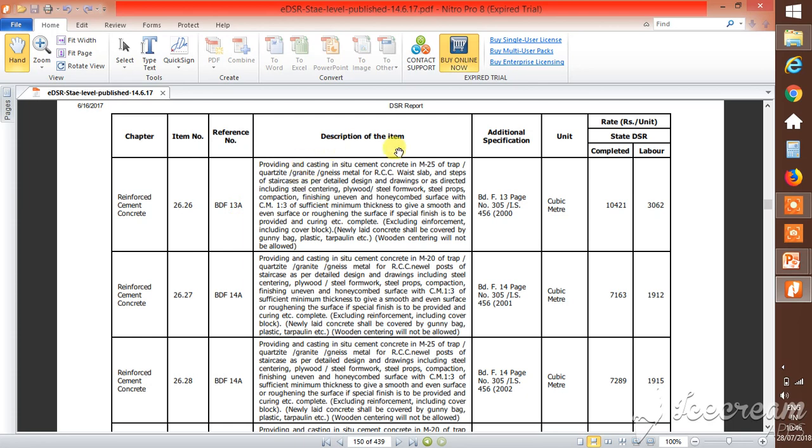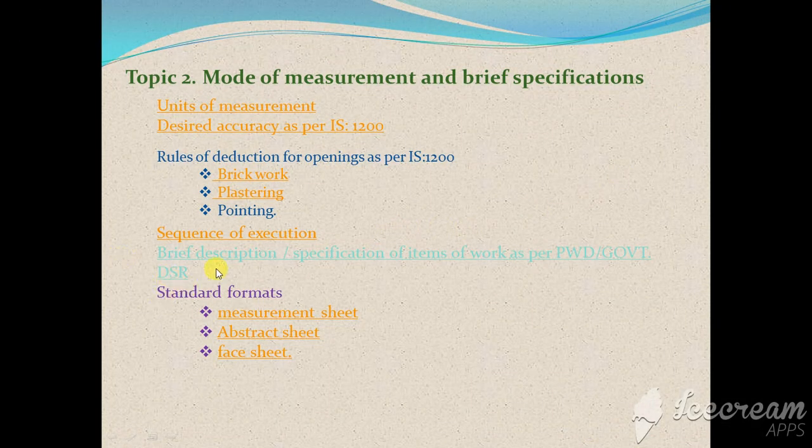Look at this - these are the item numbers given, 26.26, reference number that is BDF 13A, and description of the item: providing and casting. All the things are being there - which kind of quality of material we are going to use, their unit of measurement, and the rates. These are the rates including the material and contract labor contracts, and these are only for the labor contracts. So this is the DSR which is being used hereafter while going for different kinds of estimates.